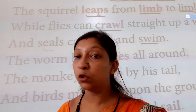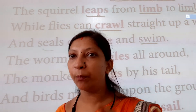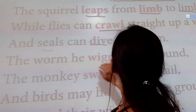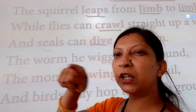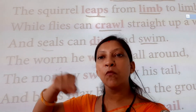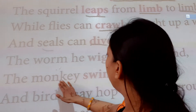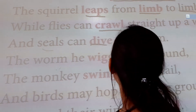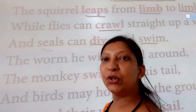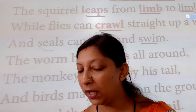Be careful children, don't eat junk food too much. Worms wiggle all around — 'all around' means everywhere, in every direction. The monkey swings by his tail. Monkeys, you know. 'Swing' means to swing like a swing — the monkey leaps here and there and swings by his tail.